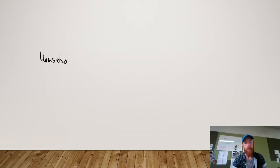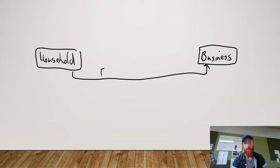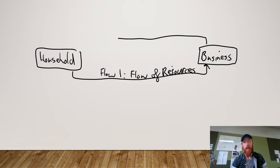Hopefully you remember from Unit 1 and 2 VCE Economics that we had a two-sector model with households on one side and the business sector on the other. Households provide businesses with resources — that's flow one, the flow of resources — things like labour, land, and capital that businesses get from households so they can produce goods and services. In return, businesses pay households an income: rent, salaries, wages. That's flow two, the flow of income.